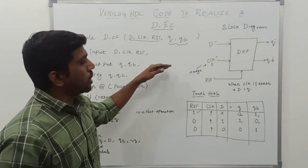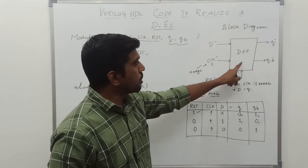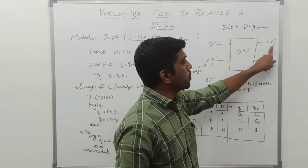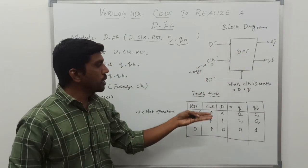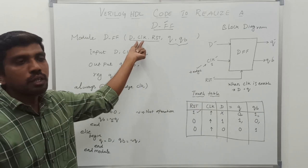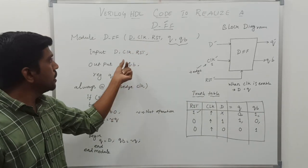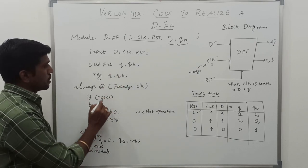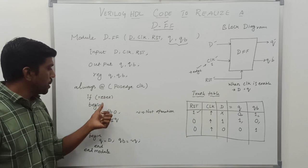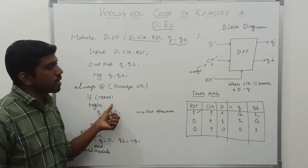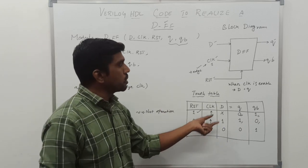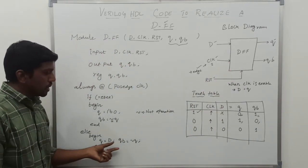This is the way to write a D flip-flop program. First you draw the block diagram, then mention the input variables D, clock, and reset, and the output variables Q and QB. After drawing the block diagram, write the truth table. Then declare the module name and list the input and output variables. Then declare input and output. Then use 'always @' with positive edge clock. If reset is enabled, handle that case; else when reset is 0, handle the normal D flip-flop operation — that is what you write in the code.